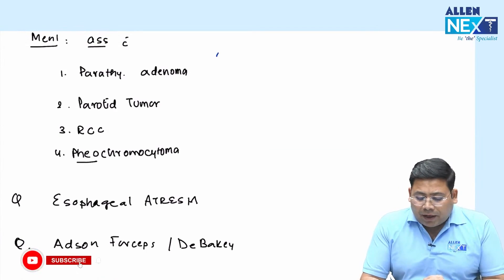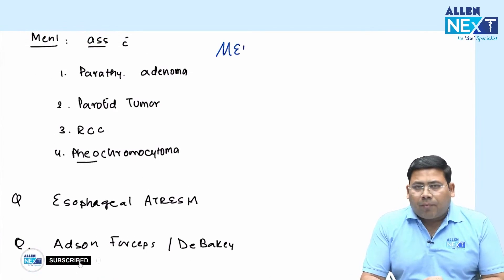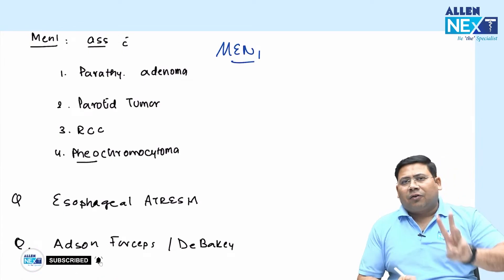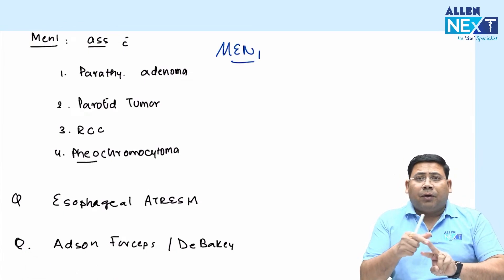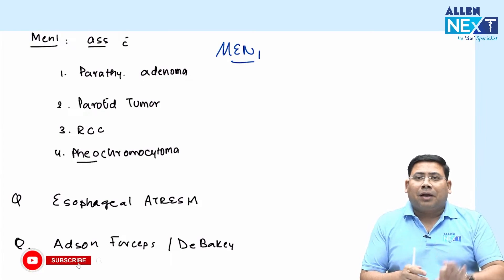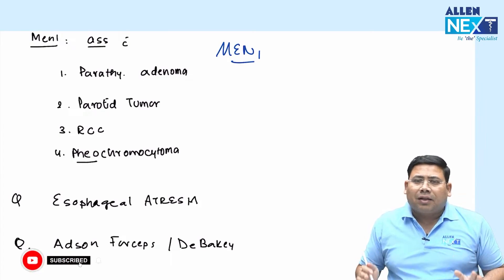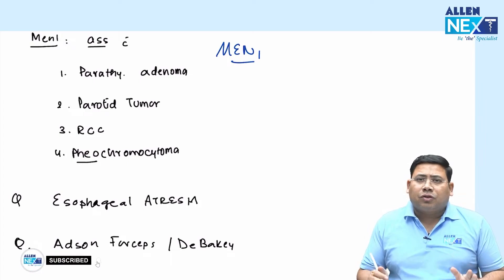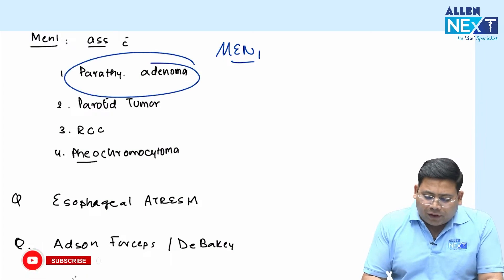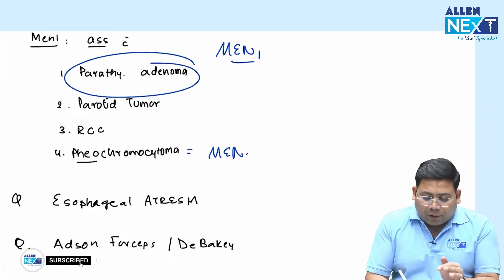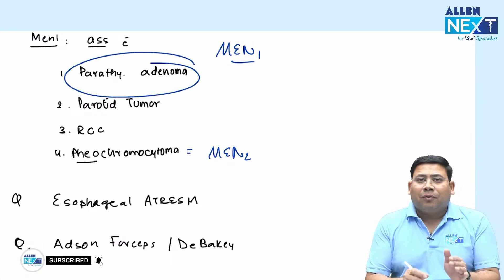There was a question on MEN syndrome. For MEN 1, the three target organs are parathyroid, pituitary, and pancreas. Parathyroid adenoma is seen in MEN 1 — parathyroid tumors are seen with MEN 2, not MEN 1 in the same context. Fewer features are seen with MEN 2.